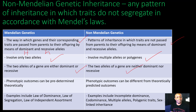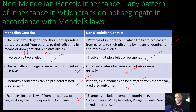In Mendelian genetics, the phenotypic outcomes can be predetermined theoretically — you can do this by putting together a Punnett square, which gives you phenotypic and genotypic ratios of offspring. But in non-Mendelian genetics, the phenotypic outcomes can differ from theoretically predicted outcomes, making it very challenging to predict a person's eye color, hair color, or height. Examples of Mendelian genetics include the law of dominance, law of segregation, and the law of independent assortment. Examples of non-Mendelian genetics include incomplete dominance, co-dominance, multiple alleles, polygenic traits, and sex-linked inheritance.